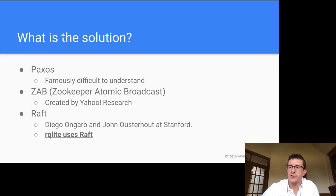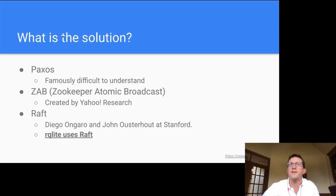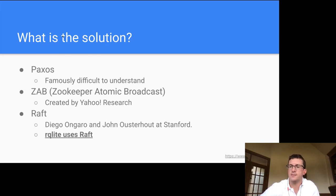This is what Raft does for the system. It provides a solution to determine the authoritative state of a variable at any point in time on a clustered system, even in the event of failures. In the case of RQLite, that state is an entire SQLite database — and that is how the two are bonded together.